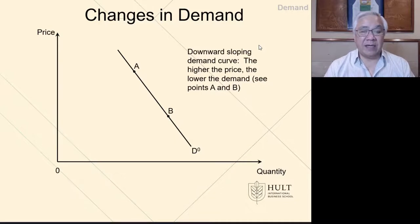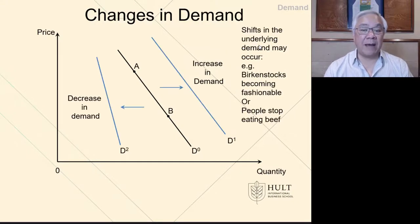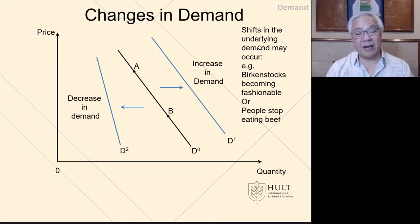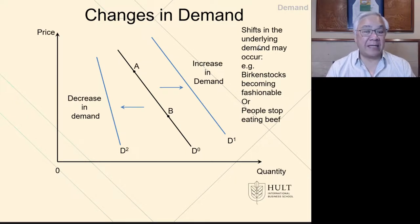Changes in demand are going to be illustrated in the next two examples. The first is a normal state where we have a downward sloping curve, where at point A we have a certain amount we're willing to buy at a higher price. However, if the price were to drop to B, the quantity demanded would rise — that's the normal shape of a demand curve. Next, we'll look at what happens when there's a shift in underlying demand. An example of increased demand is that Birkenstocks are now popular again — that would shift the demand curve to the right, so at a given price the demand increases. On the other side, if people stop eating beef because we've moved to impossible burgers, that would shift the demand curve to the left, so at the same price we would have a lower quantity. Notice these have nothing to do with the price of the product itself, but with the underlying demand for that product.